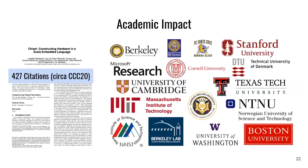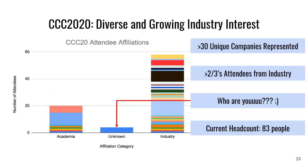Trying to figure out the academic impact of Chisel: the original 2012 DAC paper now has 427 citations, which is pretty great. CCC 2020 is really diverse and growing. Here's a breakdown of the attendees: we have a current head count of 83 people and over 30 unique companies represented. Over two-thirds of our attendees are from industry. So who are you unknowns? It's actually really cool.